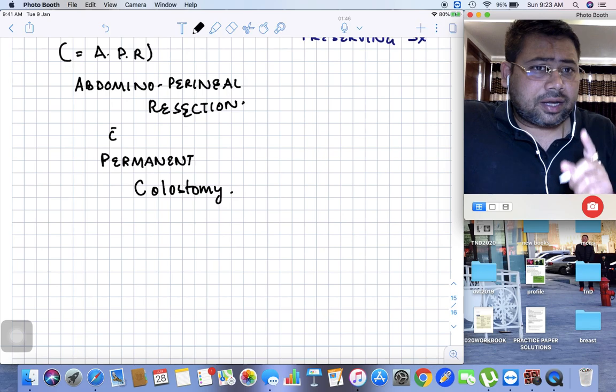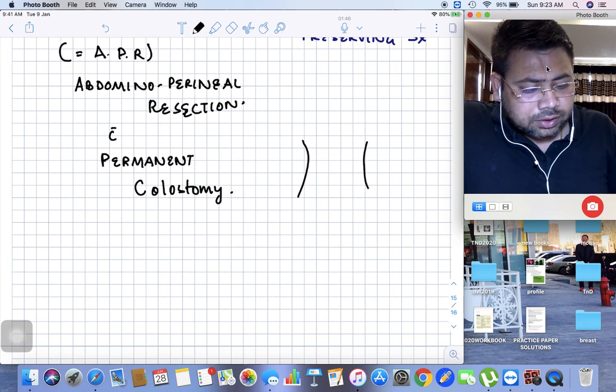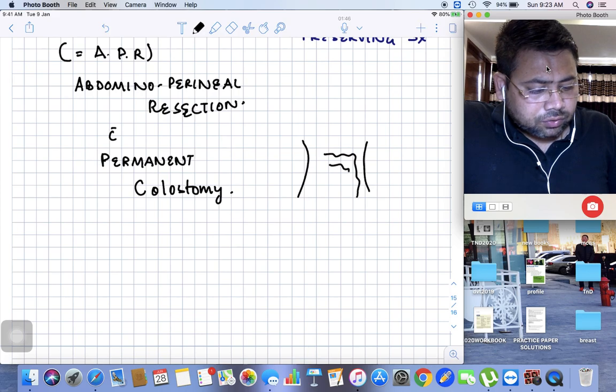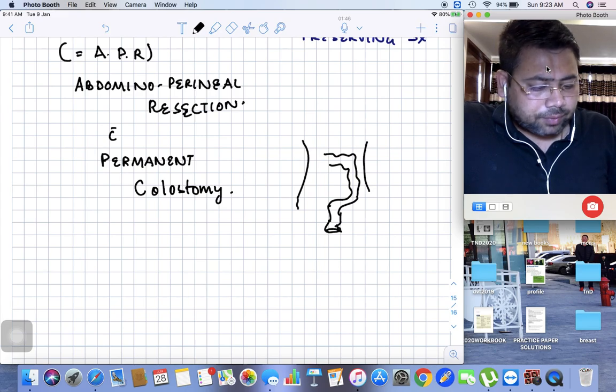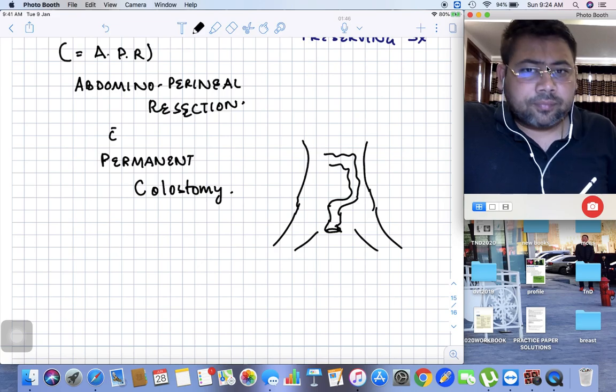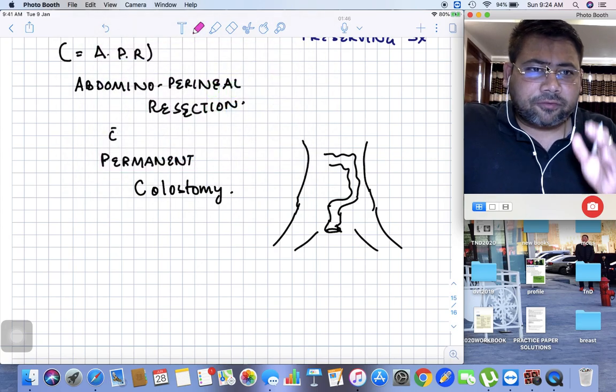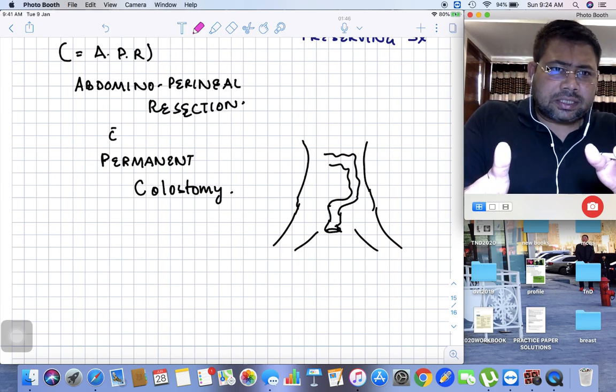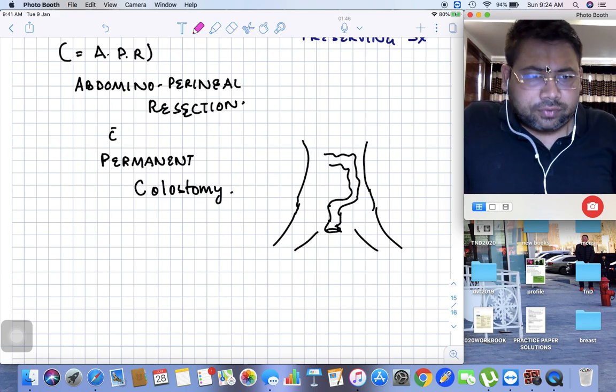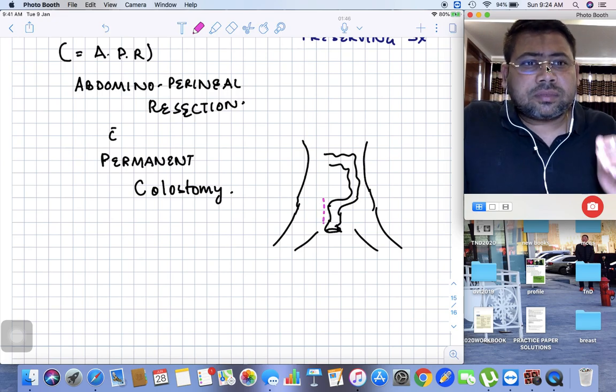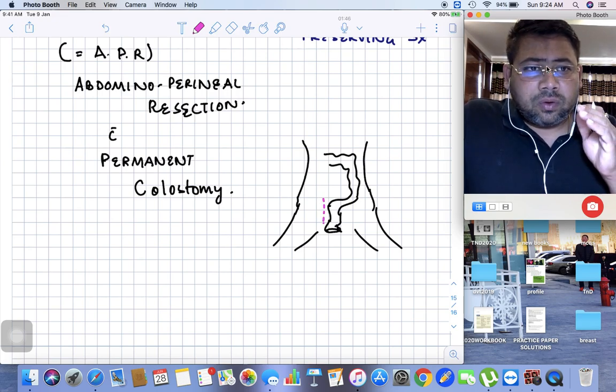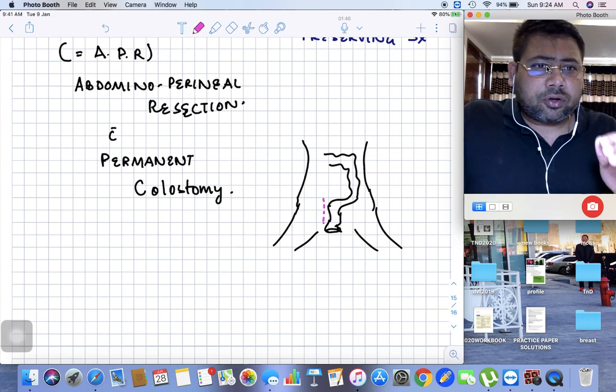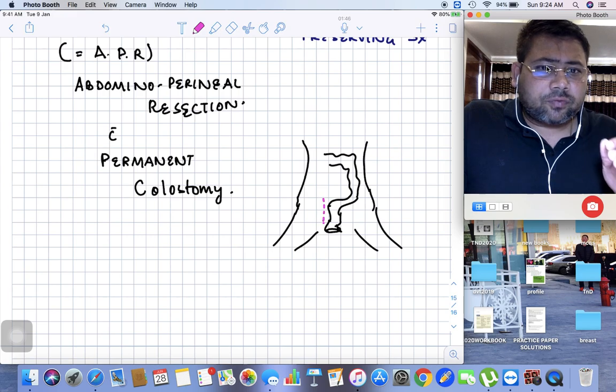Why is it known as APR - abdominal perineal resection? Suppose this is the bowel, large colon, here is the rectum, and then the anal verge. This is the patient. The first approach is always from the abdominal side. When you have to remove the complete rectum and anal canal, the majority up to the pelvic diaphragm is removed from the abdominal incision, and then you change the position of the patient.